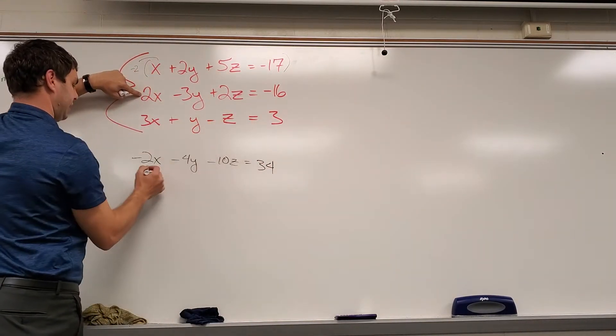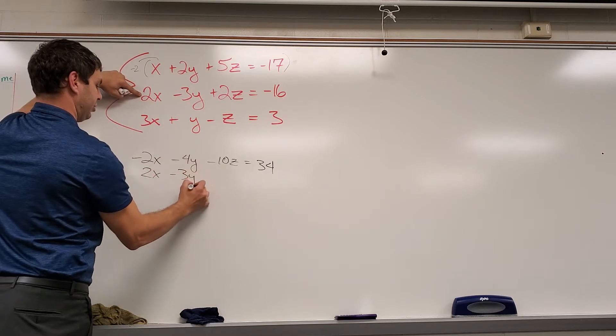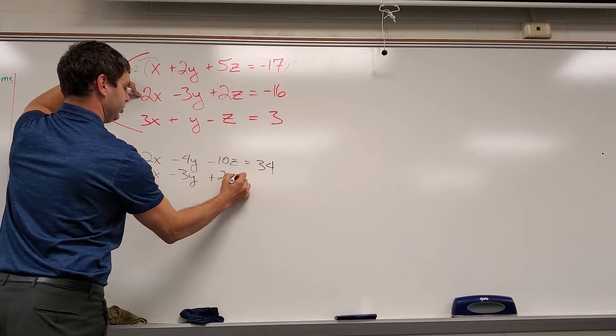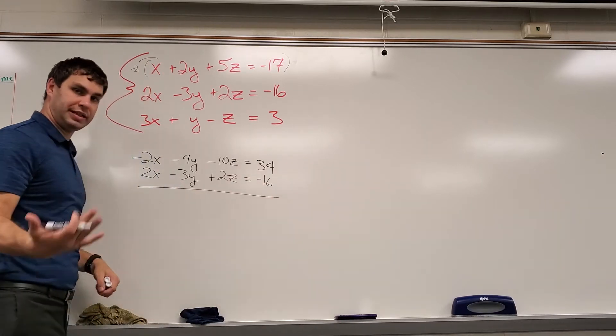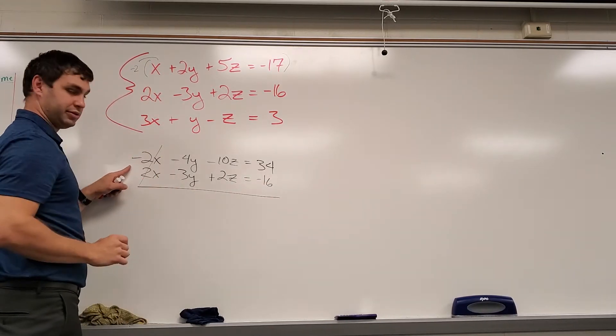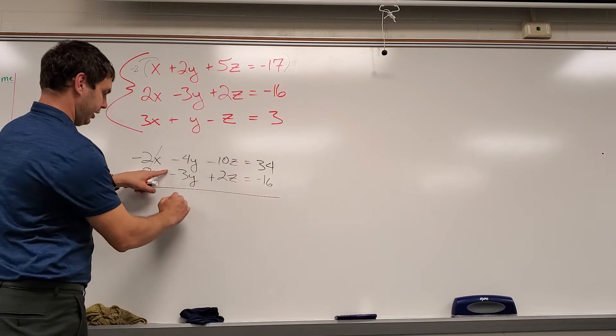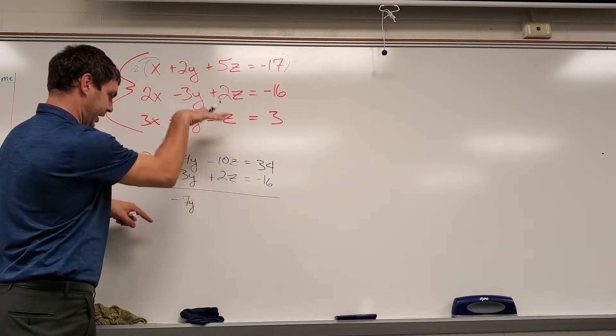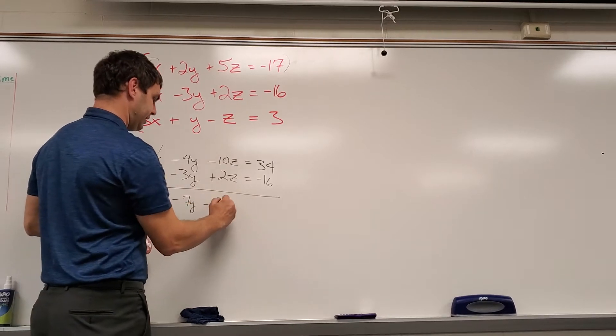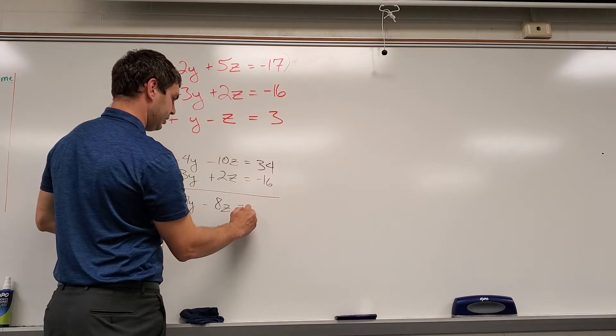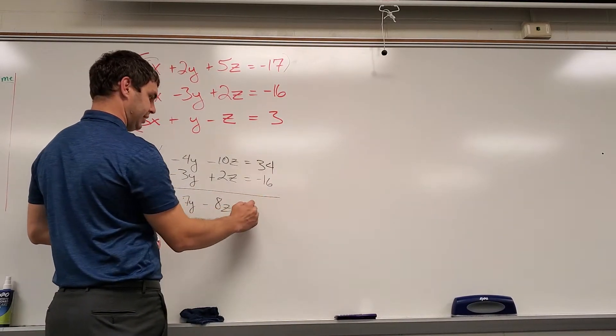Okay, then just rewrite the second one. 2x minus 3y plus 2z equals negative 16. And you can see the x's are going to eliminate. That's great. Negative 7y, if I keep adding these together, and then negative 10z plus 2z is negative 8z equals 34 minus 16 is 18.